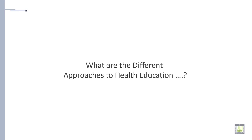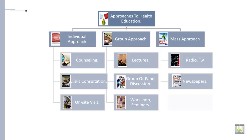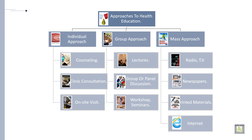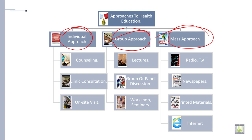What are the different approaches to health education? The different approaches are: individual approach, group approach, and mass approach. Under the individual approach, there are three sub-approaches: counseling, clinical consultation, and on-site visit.